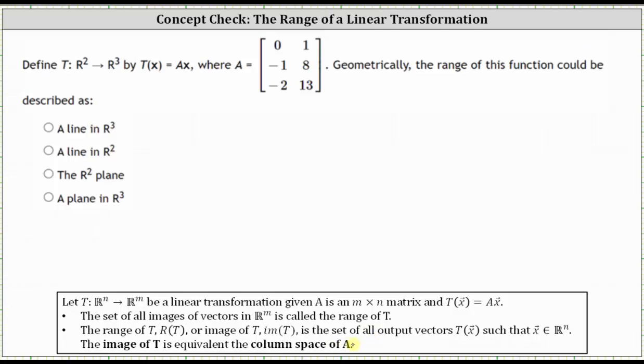Remember, the column space of matrix A is the span of the vectors formed using the columns of matrix A. If we take a look at the columns of matrix A, notice the columns have three entries, and therefore we have two vectors in R3, where the first vector is zero, negative one, negative two, and the second vector is one, eight, 13.